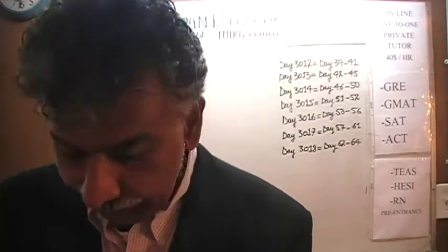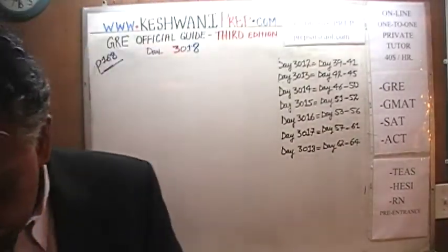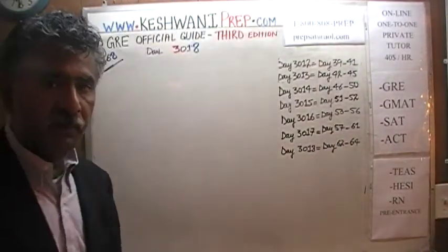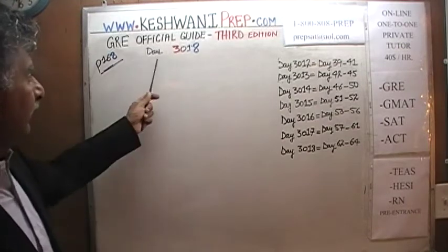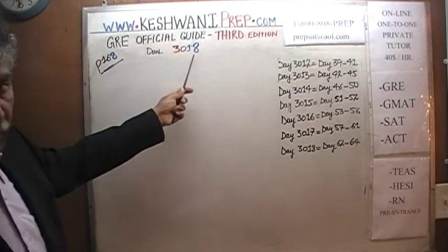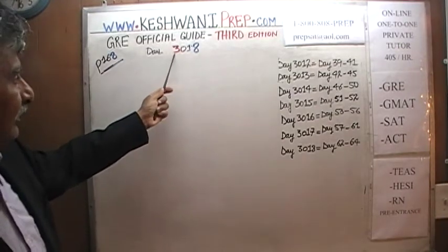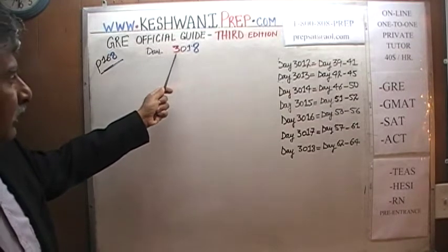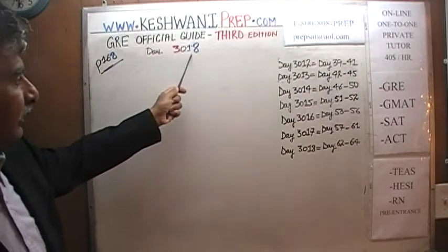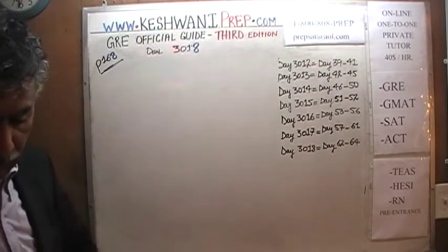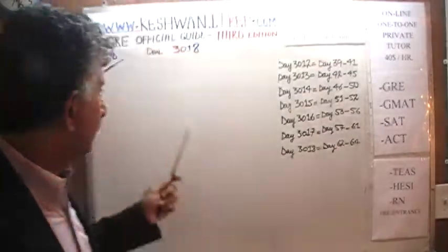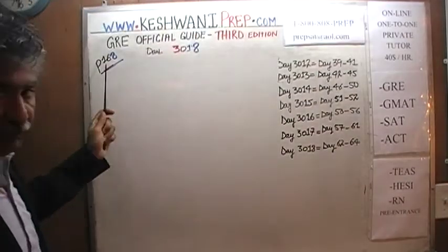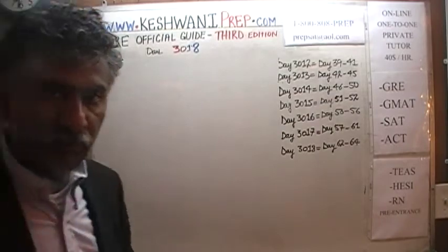Today is our lesson number 18. We are on page number 168 — it says 3018, where 3 stands for the fact that we are in the 3rd edition, and 18 is day 18. There are 3 problems that you will see on page number 168, so please turn to it and make sure the book is in front of you.